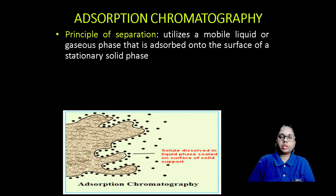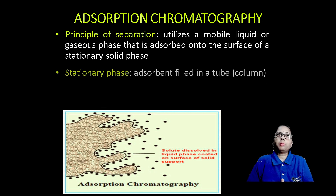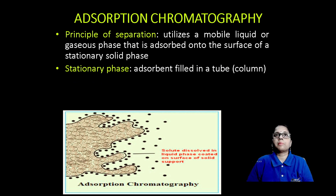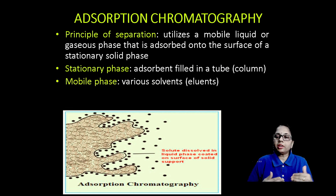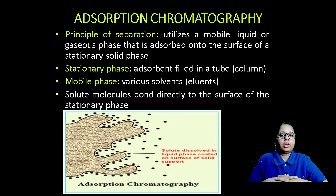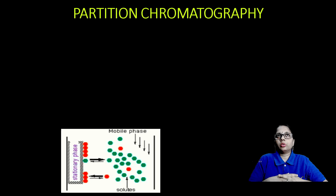In adsorption chromatography, the principle utilizes a mobile liquid or gas phase that is adsorbed onto the surface of a stationary solid phase. The stationary phase here is an adsorbent filled into a tube, and the mobile phase consists of various solvents that directly bind to the surface of this supporting media.